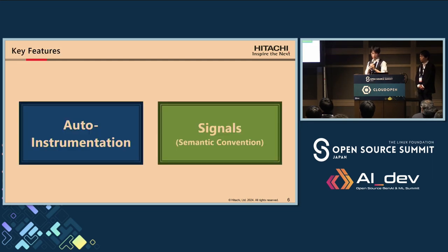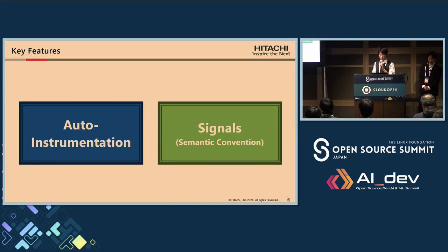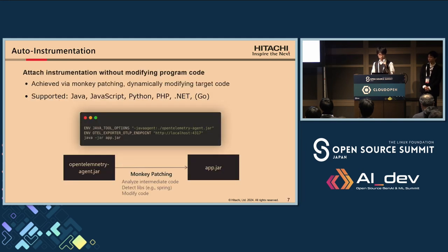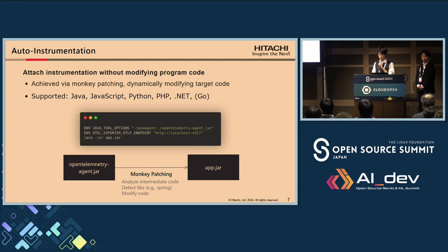To achieve this approach, there are two key OTEL features. The first is auto-instrumentation, and the second is signals. Auto-instrumentation means instrumentation without modifying program code, using a technique called monkey-patching. When the auto-instrumentation tool — the OpenTelemetry agent — is attached, it analyzes intermediate code and detects frameworks like Spring Boot.